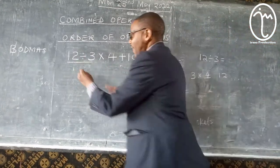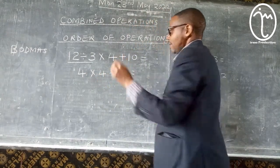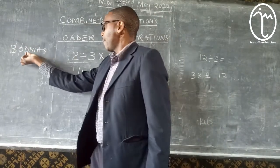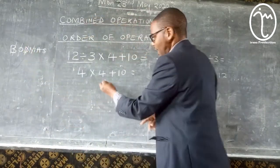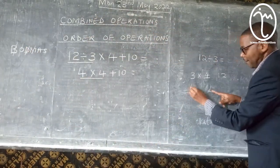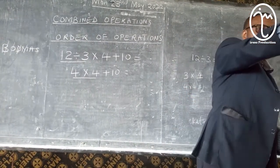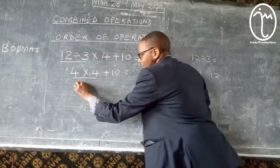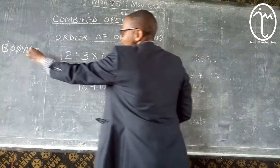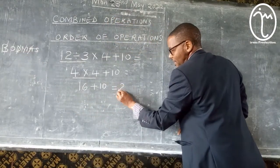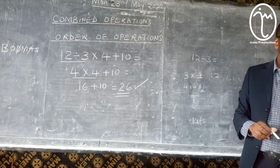So we have 4. So we have 4 times 4 plus 10. Now, after division, which step should follow? Multiplication. We multiply here — 4 times 4. Raise your hand. 4 times 4 is 16. So here we get 16 plus 10. Because the last operation now will be addition. We get 16 plus 10 is 26. So if you follow that order, you want to get the question right.